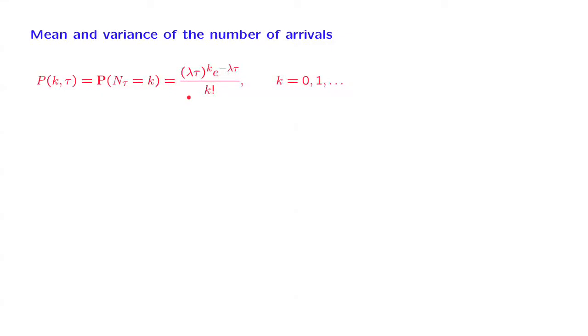Now that we have in our hands the PMF of the random variable n_tau, which is the number of arrivals during an interval of length tau, we can go ahead and try to calculate the mean and variance of this quantity.